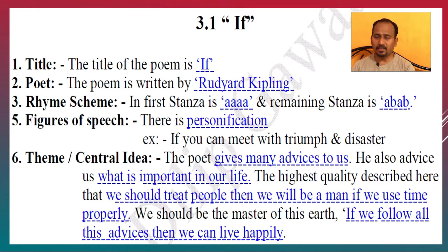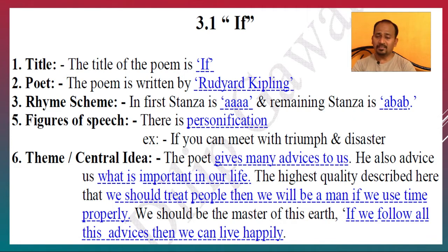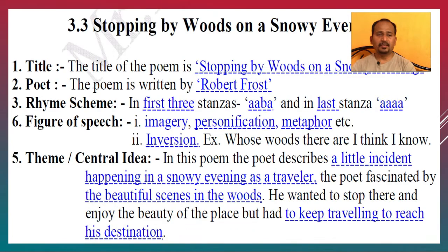Next point, Figures of Speech — there is a figure of speech: Personification. For example, 'If you can meet with Triumph and Disaster.' Next point, Theme or Central Idea — the poet gives many advices to us. He advises us what is important in our life. The highest quality described is that we should treat people well; if we use time properly we should be the master of this earth. If we follow all these advices then we can live happily.